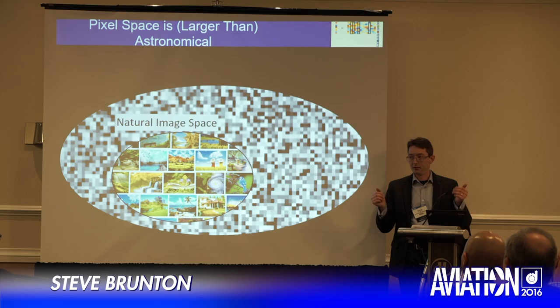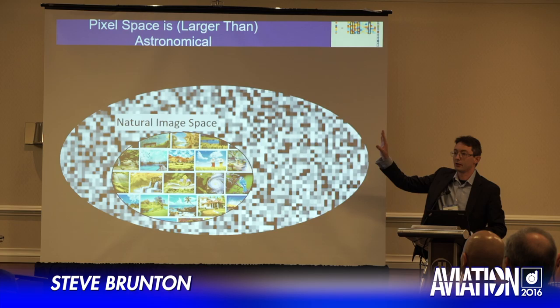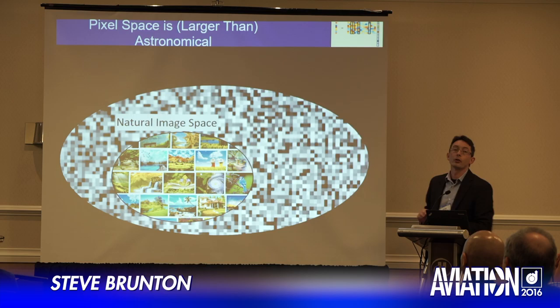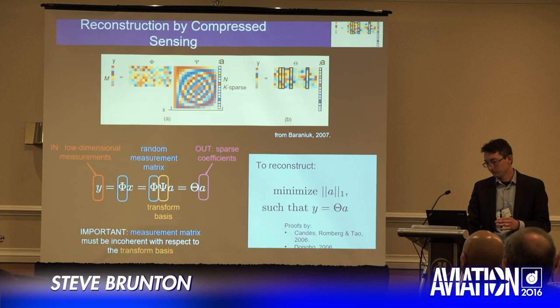For example, right now I'm looking at you — that's a picture in image space. You being born, even if no one took a picture, that's a picture in image space. All of the structured images you ever care about — anything that's not pre-compressed — lives in this tiny corner of this vast image space. The same is true of flow fields and hotwire measurements. These are very sparse in some appropriate transform basis.